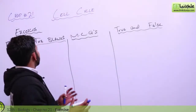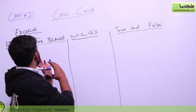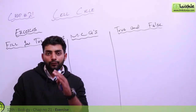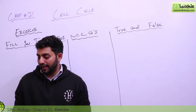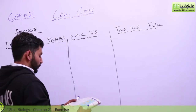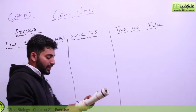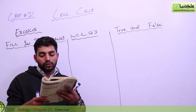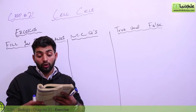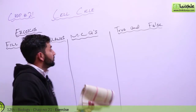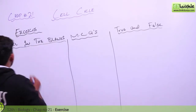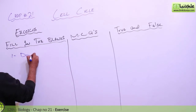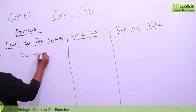Alright guys, let us discuss the exercise of cell cycle. First, we have fill-in-the-blanks. The first question asks that Mongolism is also known as what. Mongolism is also called Down syndrome. So the first answer is Down syndrome.